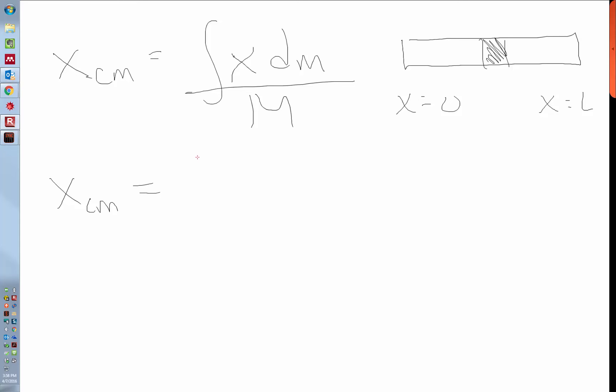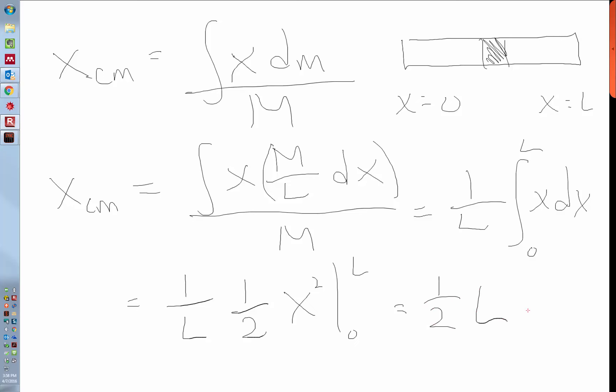So we'll have the integral of x, and each little piece of mass is the density of the rod, M over L, times dx. That's the little piece of mass divided by M. And so this is a pretty straightforward integral. It's going to be 1 over L times the integral of x dx from 0 to L. And this is then 1 over L times 1 half x squared, evaluated, and we end up with 1 half L, which is pretty much what we expected, right? That the center of mass is in the middle.